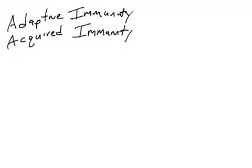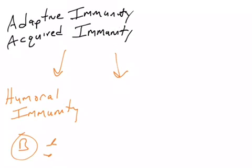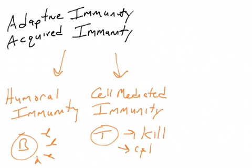That brings us to the second arm of the immune system called adaptive immunity or acquired immunity. Those terms are used interchangeably. In the adaptive or acquired immune system, there are two main arms. There's humoral immunity, which involves B cells recognizing pathogens and releasing antibodies to combat the pathogens. And that's what we're going to focus on in this unit.